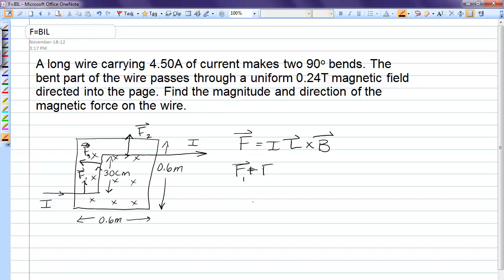F1 plus F2, and that's as though we just have a horizontal piece of wire of length 0.6 meters in that field. So current is 4.5 amperes, the length essentially is 0.6 meters, and the field is 0.24 tesla. And everything's perpendicular, so the cross product just drops out.